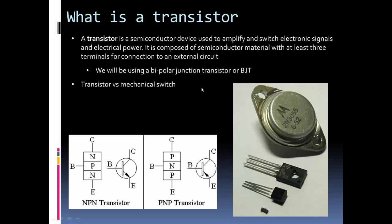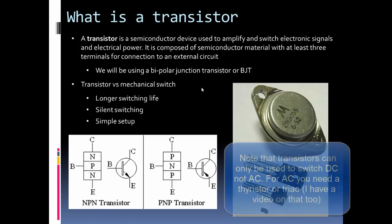So a transistor versus a mechanical switch. Why would we want to use a transistor as a switch? Well, longer switching life, there's no mechanical parts. We're just changing the physics of semiconductor materials to turn a pathway from high resistance to very low resistance. They're silent switchers, unlike mechanical switches they don't make any noise. And the setup can actually be a lot simpler than a mechanical switch.